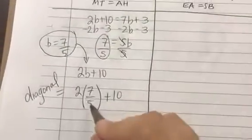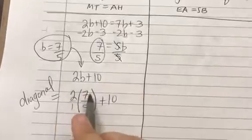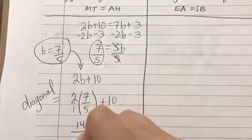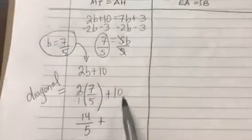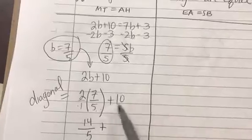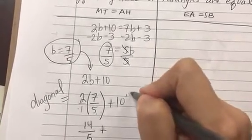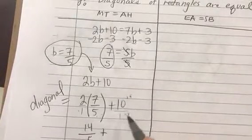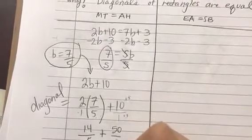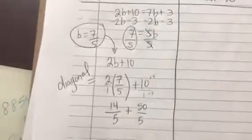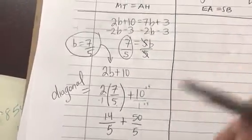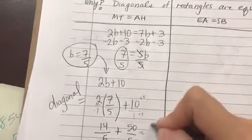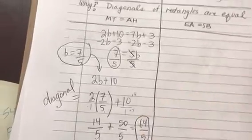You actually know that 2 times 7 over 5 plus 10 would equal either diagonal because they are equal. To solve the length of diagonal, you have to know that to multiply fractions, you just multiply numerators, multiply denominators. So 2 times 7 is 14. 1 times 5 is 5. And now you're trying to add the number 10, but you can't because it doesn't have a common denominator. Notice if I multiply the top and the bottom by 5, I get 50 over 5. And yes, the number 50 over 5 really is the number 10. Those are exactly the same number. Now I'm able to combine like terms.